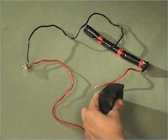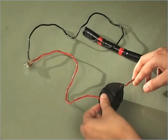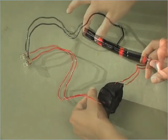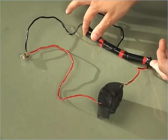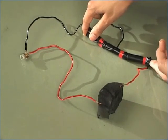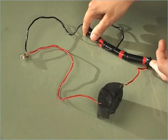Now connect the coal piece between the open ends of wires. You will observe that the bulb does not glow this time. It shows that coal is a bad conductor of electricity.